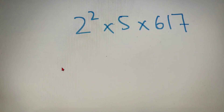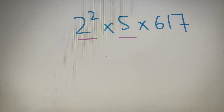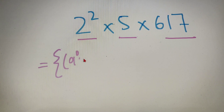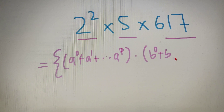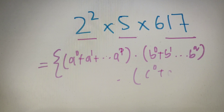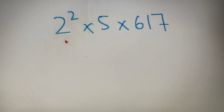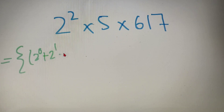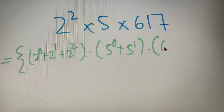Now the next part that we have to calculate is the sum of factors. Now if the prime factorization of the number is of the form a raised to p into b raised to q into c raised to r, then the formula for finding out the sum of factors is: (a⁰ + a¹ + ... + aᵖ) into (b⁰ + b¹ + ... + bq) into (c⁰ + c¹ + ... + cʳ). So we just have to put the values in the formula. Our expression becomes: (2⁰ + 2¹ + 2²) into (5⁰ + 5¹) into (617⁰ + 617¹).